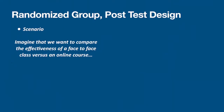Let's look at each type of design that falls under the category of true experimental designs. The first is what we call the randomized group post-test design. Imagine we want to compare the effectiveness of a face-to-face class versus an online class — this example will help paint the picture for us.